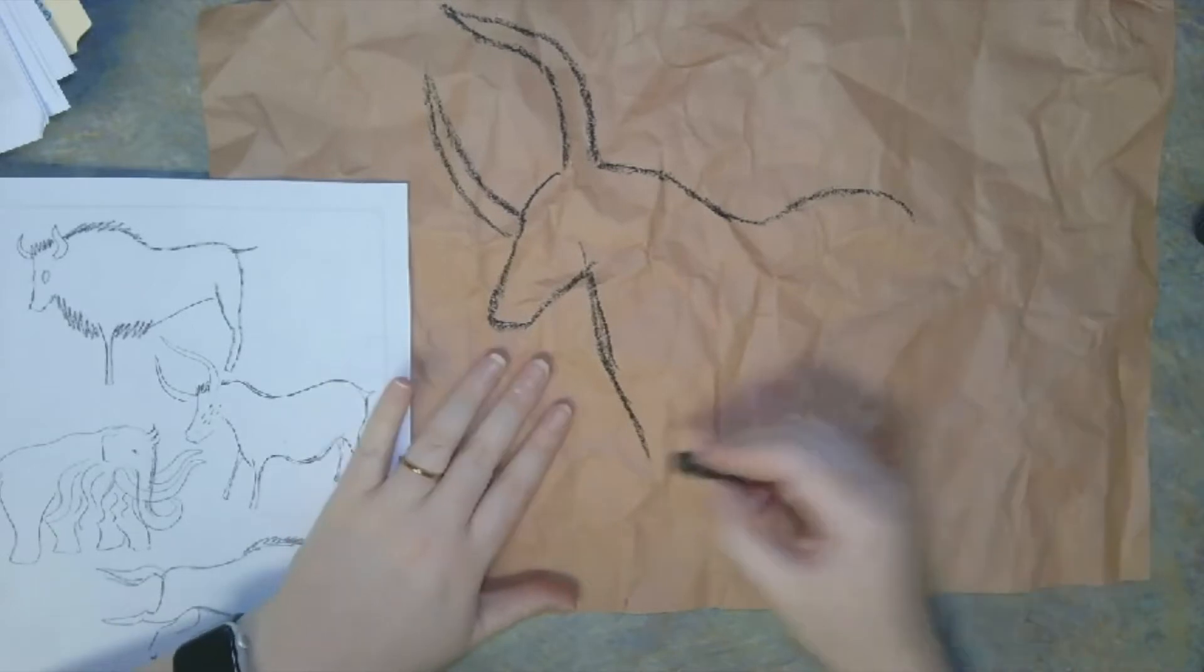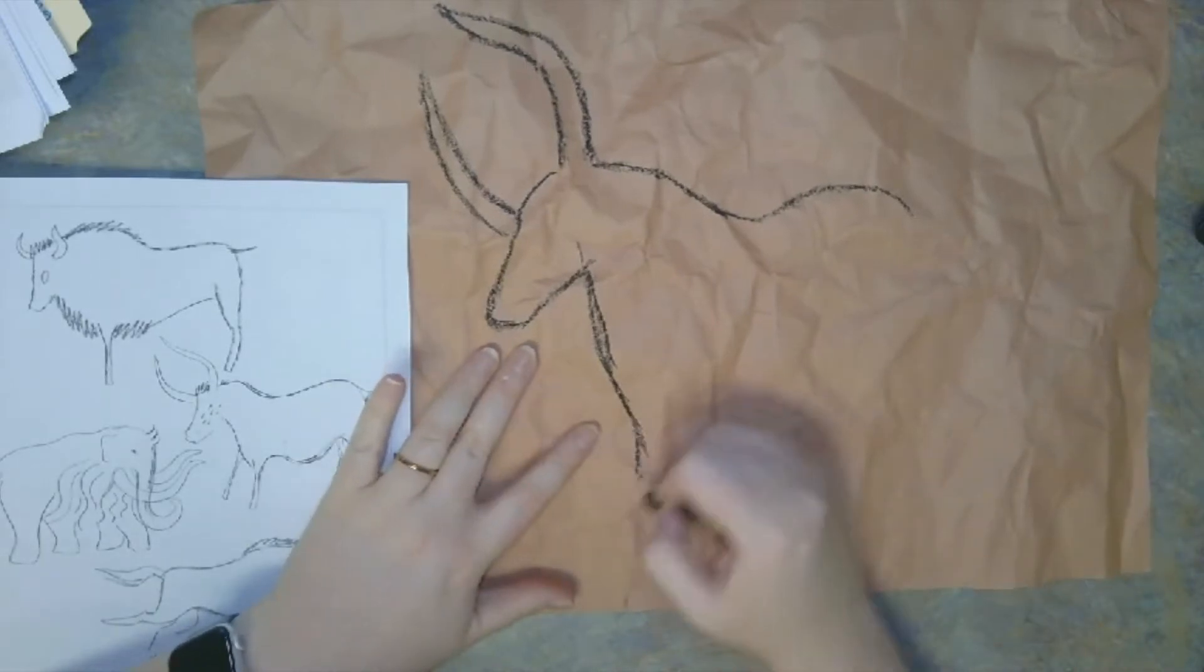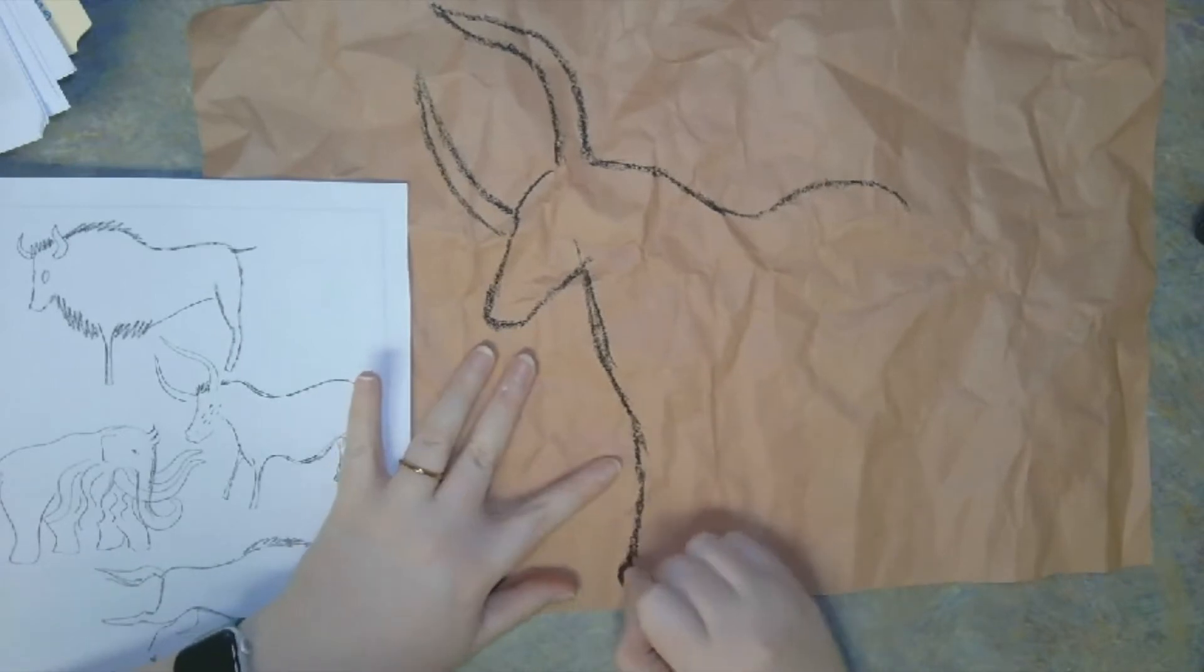One interesting thing about these ancient drawings is they do not have a lot of detail in the legs or feet. So all we're going to do is bring our line down and end it with a straight line. We don't need a detailed foot.